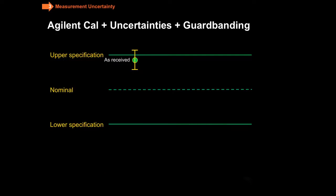Now you might have noticed there the Agilent Cal plus uncertainties plus guard banding. I can show you diagrammatically what that means. Suppose you have a measurement, as received, which is inside the specification, but a portion of your uncertainty interval goes outside of that specification. Well, the little area there in red represents the risk that the instrument may in fact be out of specification.